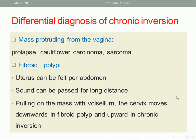The differential diagnosis of chronic inversion: differentiate from any mass protruding from the vagina, like sarcoma polyp, cauliflower carcinoma, uterine or vaginal prolapse, and fibroid polyp. In fibroid polyp, you can insert a uterine sound to a long distance into the uterine cavity, while in inversion you cannot. The uterus can be felt per abdomen in fibroid polyp, but not in inversion. Pulling the mass with vulsellum: the cervix moves downward in fibroid polyp and upward in chronic inversion.